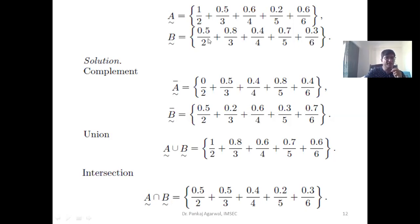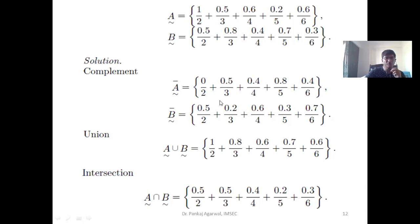If there was one element which did not get its partner in the other set, we would take the entire value as it is. For intersection, the only difference from union is that instead of taking the maximum value, we take the minimum value. For example for element 2, we would take 0.5 rather than 1. This is how intersection values can be represented.